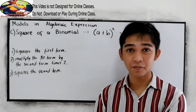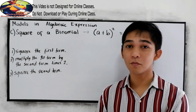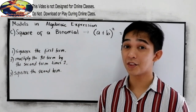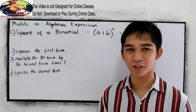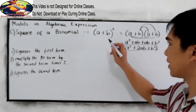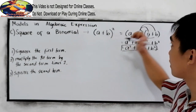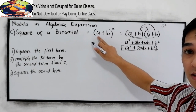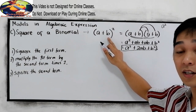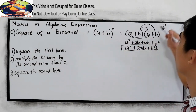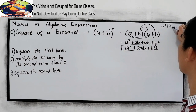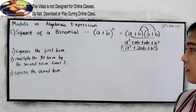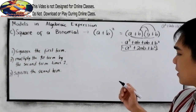So, square the first term — that gives us a squared. Multiply the first term by the second term: ab times two gives us plus 2ab. Square the second term: plus b squared. Okay, let us try some examples.